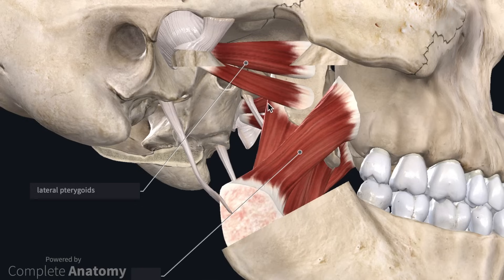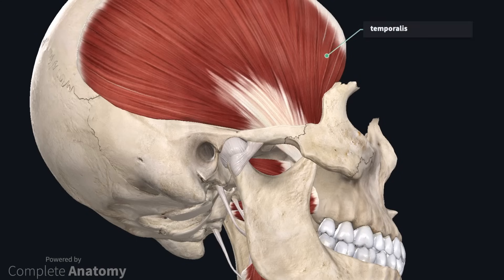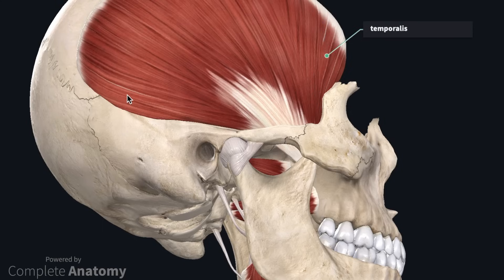Bilateral action of the medial pterygoid muscles closes the jaw and will also assist in protrusion. Unilateral contraction will swing the jaw to the contralateral side. The fan-shaped temporalis muscle arises from the temporal fossa and its fibers attach onto the coronoid process of the mandible. The anterior fibers run vertically and will assist in closing the jaw. The posterior horizontal fibers will retract the mandible.